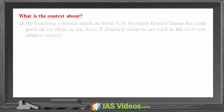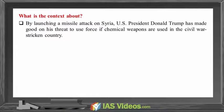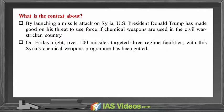What is the context? By launching a missile attack on Syria, US President Donald Trump has made good on his threat to use force if chemical weapons are used in the civil war-stricken country. On Friday night, over 100 missiles targeted three regime facilities. With this, Syria's chemical weapons program has been gutted.